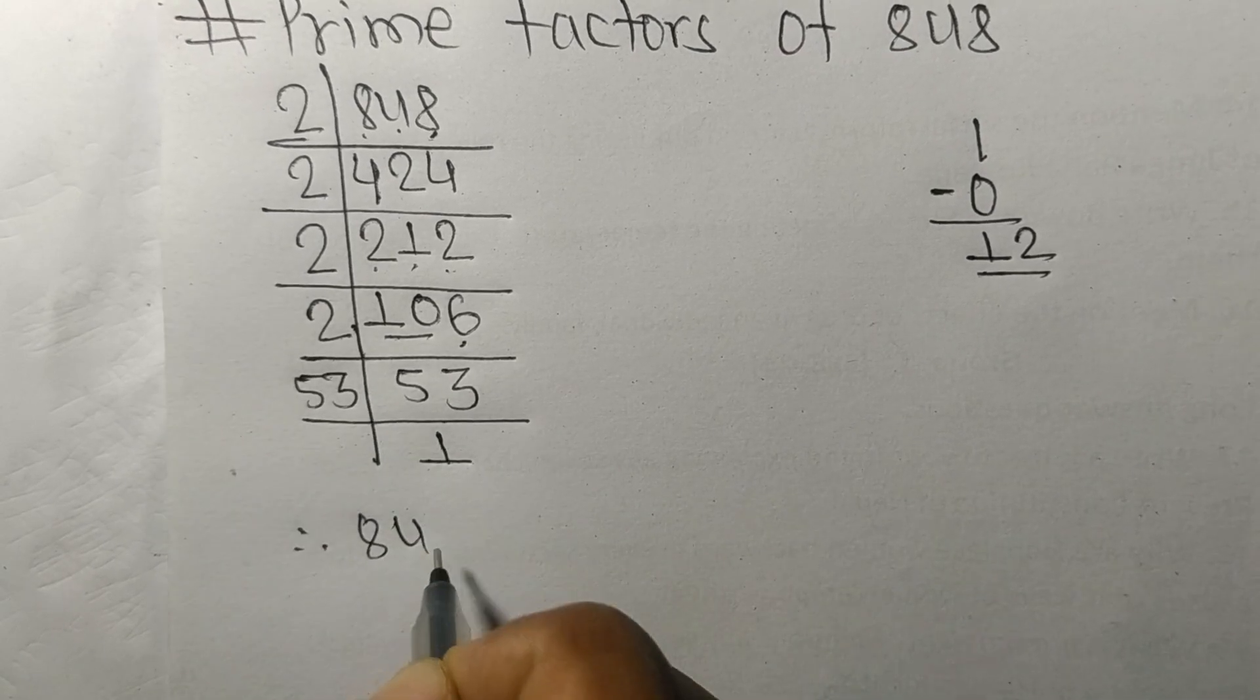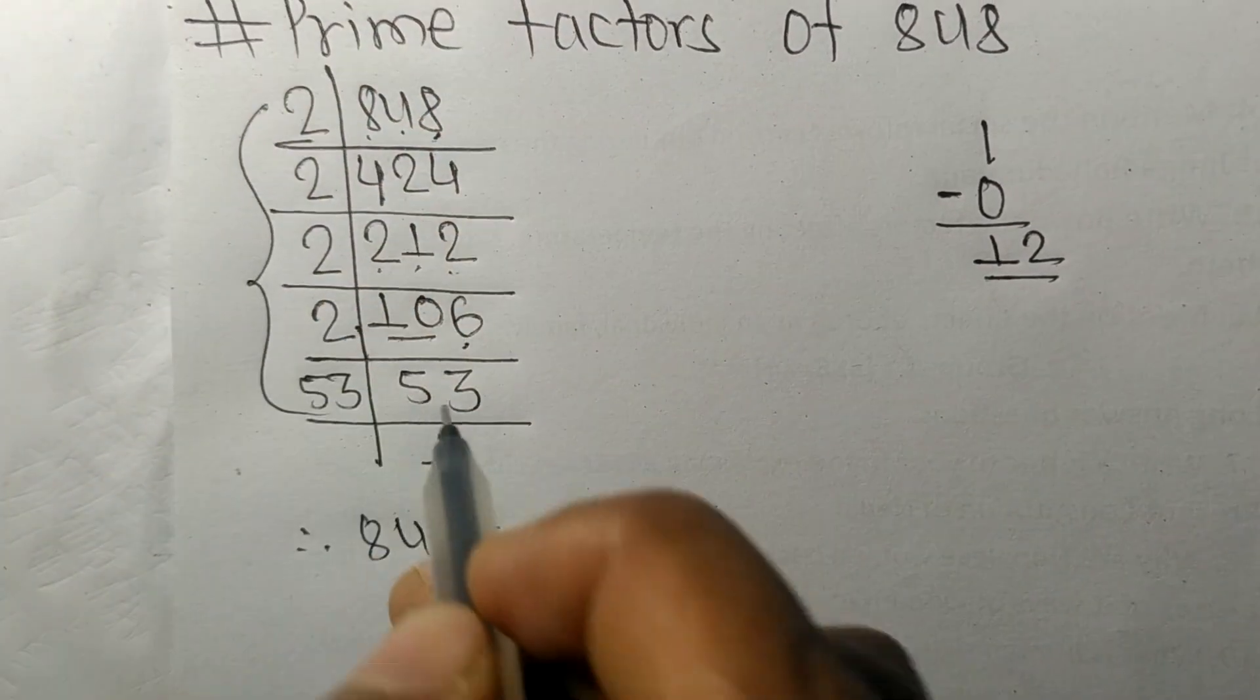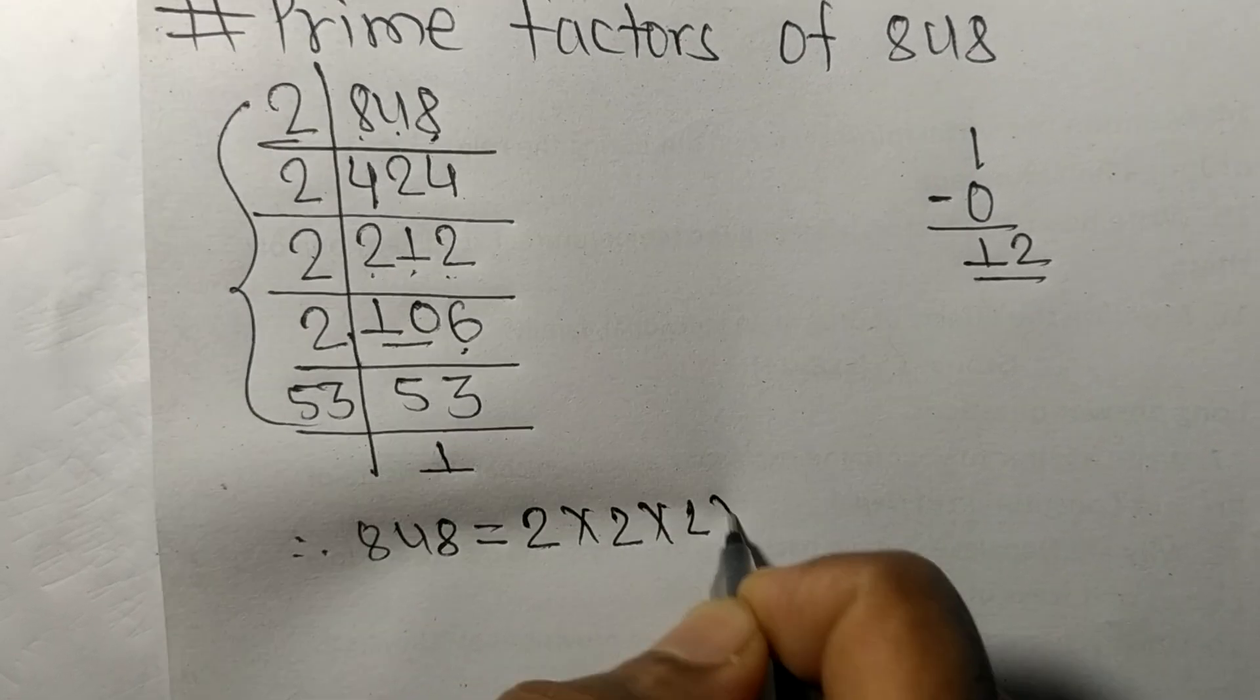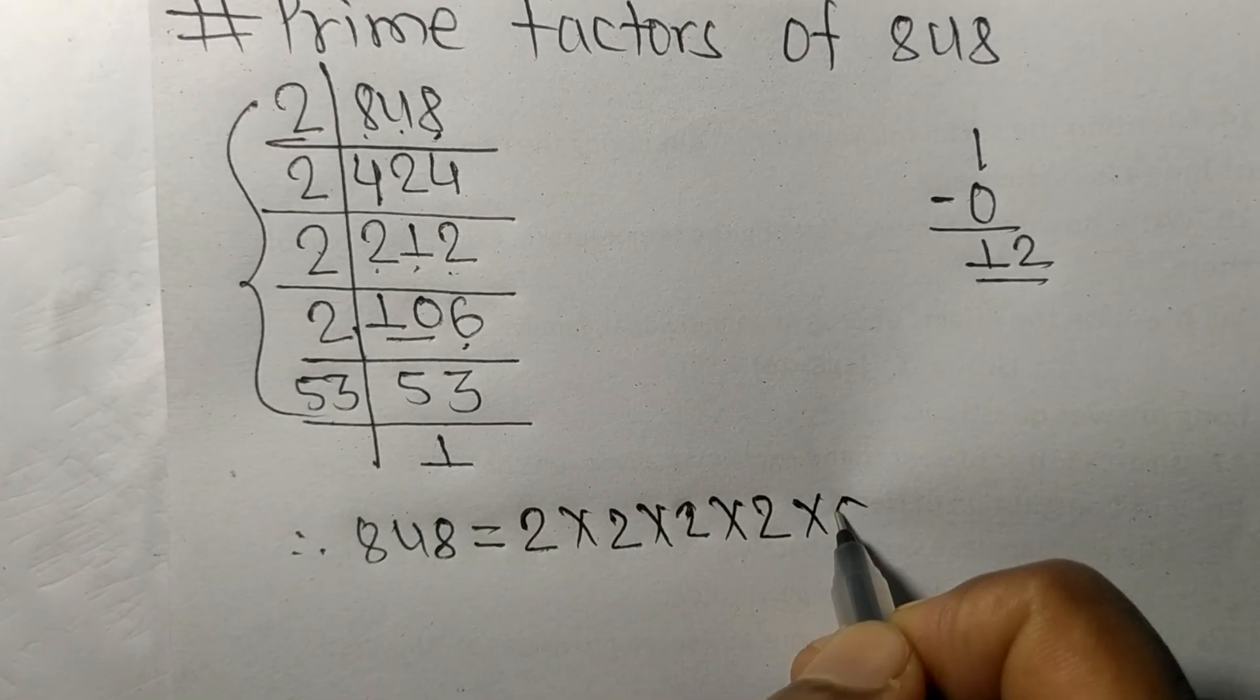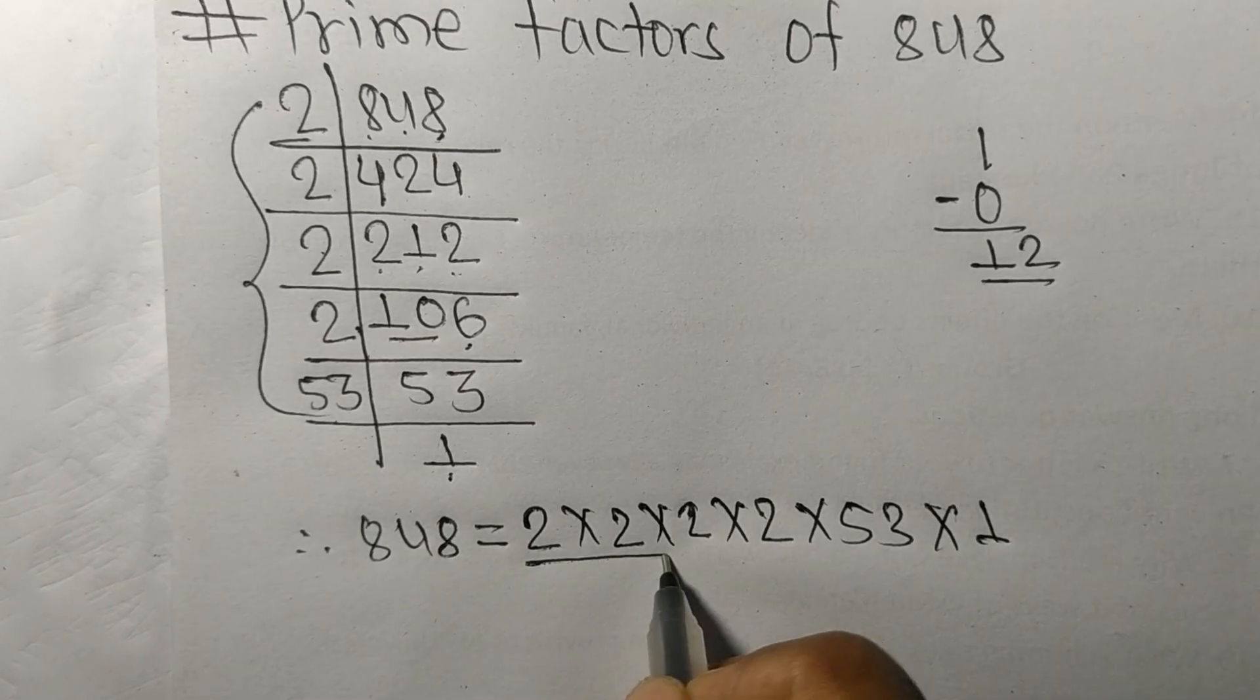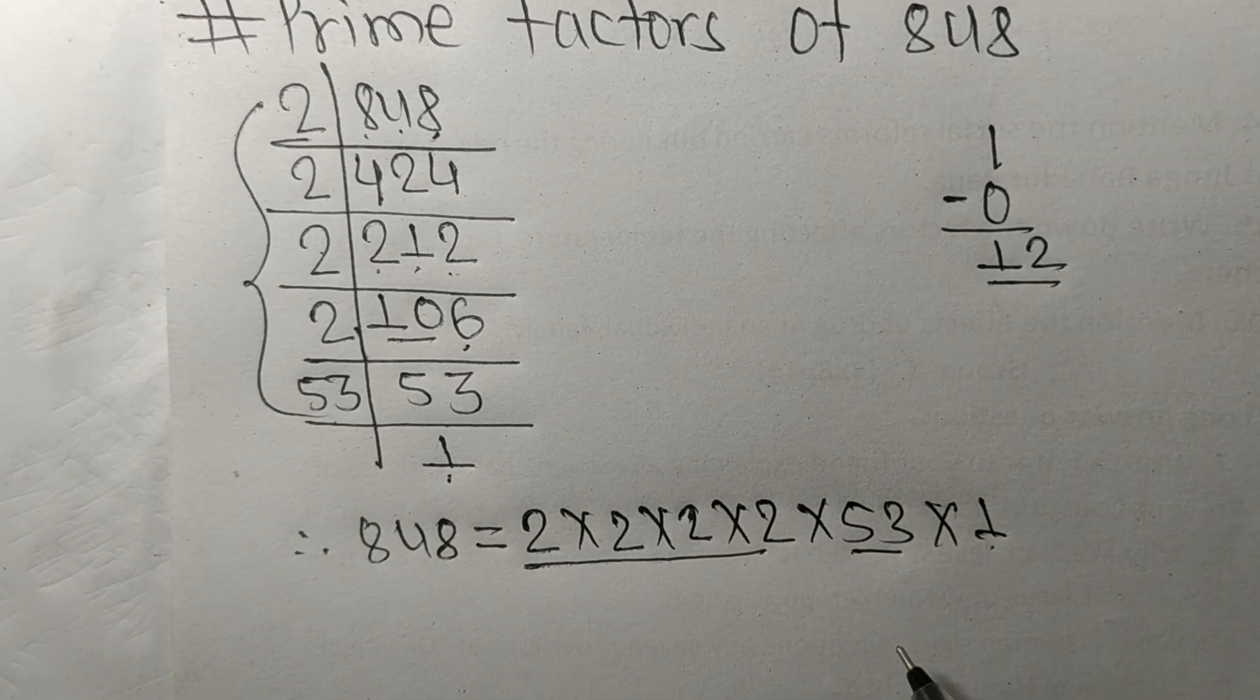Therefore, 848 is equal to, from this side it is 1, 2, 3, 4 times 2. So 1, 2, 3, 4 times 2, and here 53. So 2, 53, and 1 are the prime factors of 848.